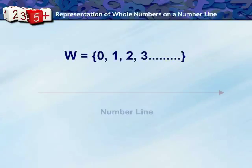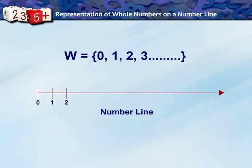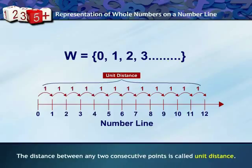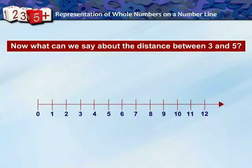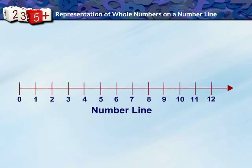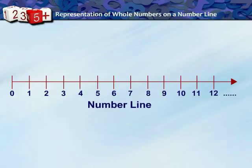Let us represent whole numbers on a number line. Draw a line, mark a point at the start and label it 0. Mark another point at some distance from 0 and label it 1. Then mark points 2, 3, 4 at equal distances. The distance between any two consecutive points is called unit distance. The distance between 3 and 5 is 2 units, and between 7 and 12 is 5 units. The arrow on the right represents the numbers continuing to infinity.